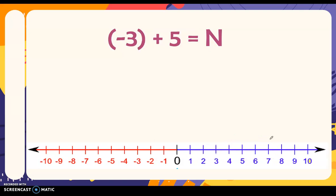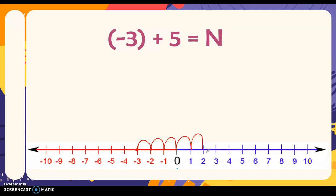We have negative three as our first addend or starting point. Then we are going to add five, which is positive. So we are still going to the right. You count five jumps — one, two, three, four, five. Negative three plus five is positive two. So again, if you're going to add a positive number, you jump to the right.